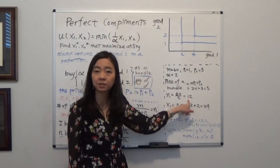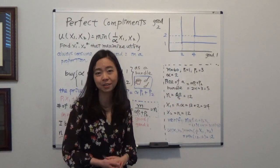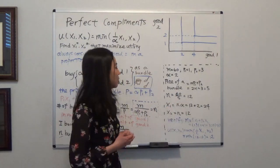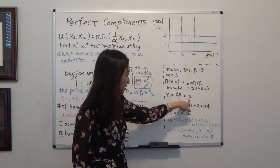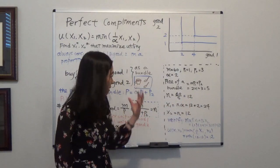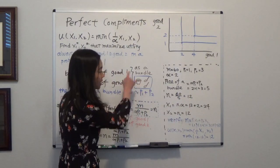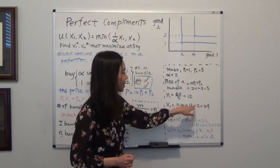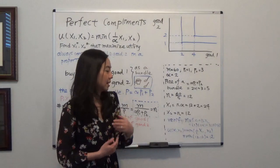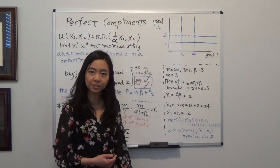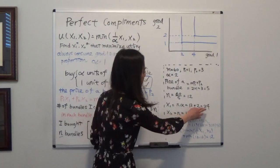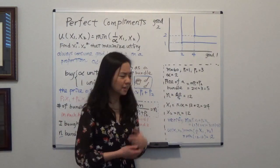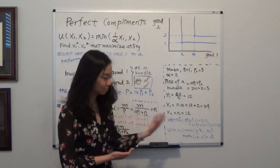From the number of bundles I can calculate how many of good one and good two I purchased. Good two is exactly equal to the number of bundles, which is 12. What about good one? That will be the number of bundles times the number of good one in each bundle. In this case there are 2 spoons of sugar, so 2 times 12 gives me 24. You can go ahead and verify: given that I purchased 24 spoons of sugar and 12 cups of coffee, did I spend my full budget?